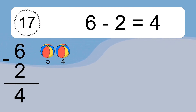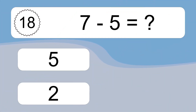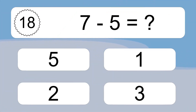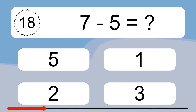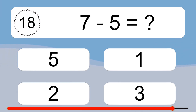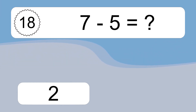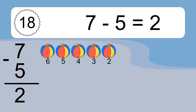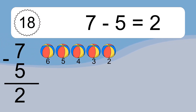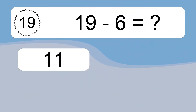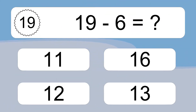7 minus 5 equals what? 7 minus 5 equals 2. Let's count it: 6, 5, 4, 3, 2. 19 minus 6 equals what?